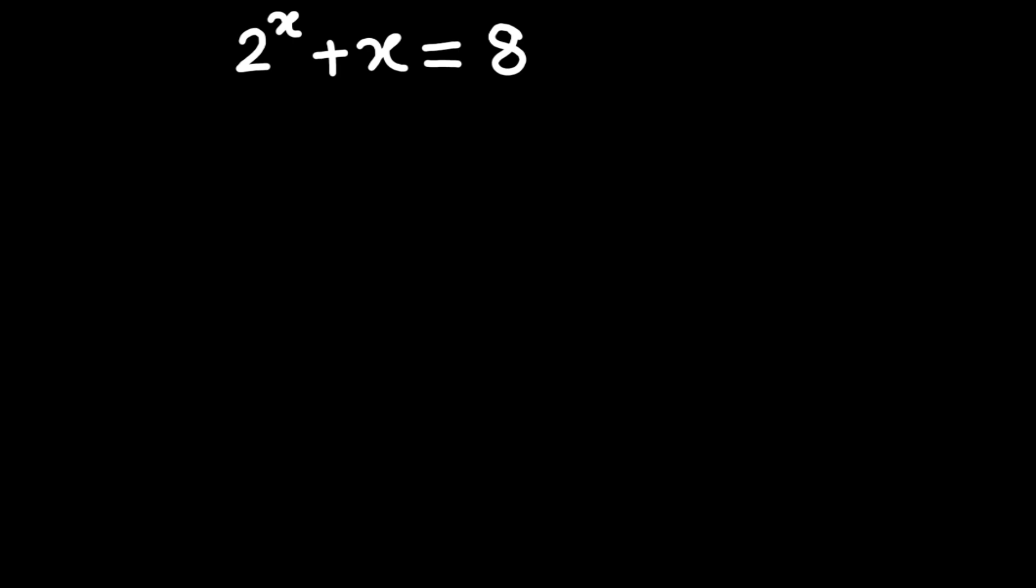Now, let's talk about proving there's exactly one real solution to this thing. To do that, let's define a function f of x equals 2 to the power x plus x minus 8. Why? Because solving 2 to the power x plus x equals 8 is the same as finding where f of x equals 0. That's where 2 to the power x plus x equals 8. To figure out if there's one solution, we need to know how this function behaves.